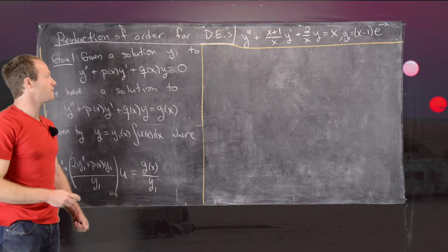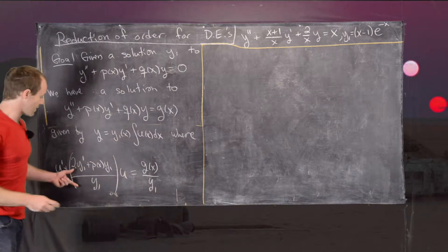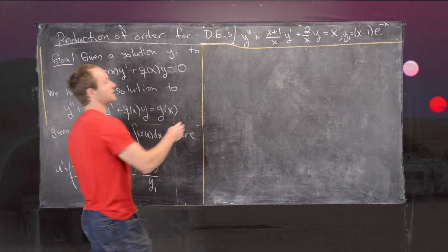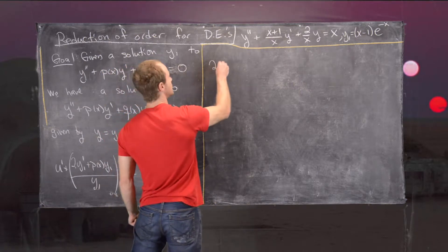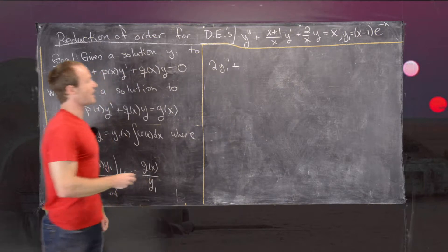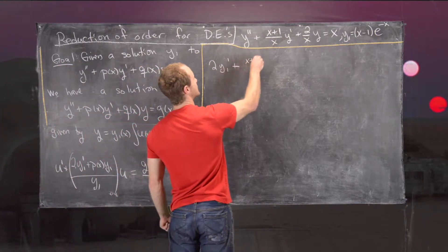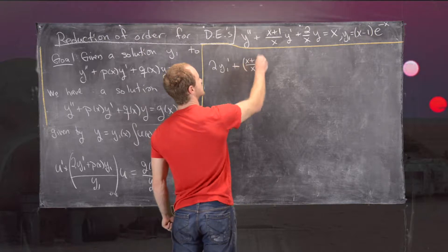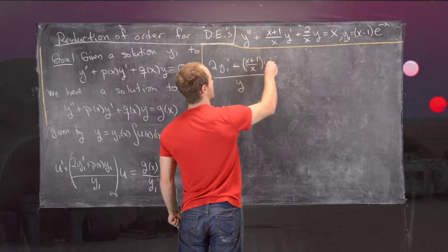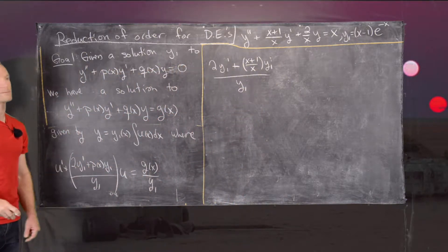Let's see what we need to do. We need to calculate the coefficient term: 2y1 prime plus p(x) times y1, all divided by y1, where p(x) is (x plus 1)/x times y1.